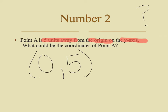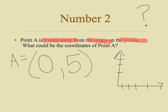So what could the coordinates of point A be? Point A would be (0, 5). And so if I had a coordinate grid, it would look a little bit like this: I'm not moving anywhere on the x-axis — I'm staying at zero — and I'm just moving up five. One, two, three, four, and I need one more: five, right here.